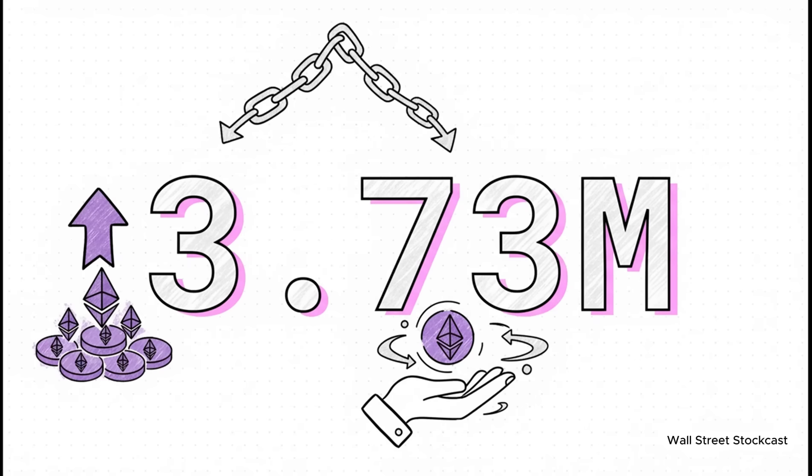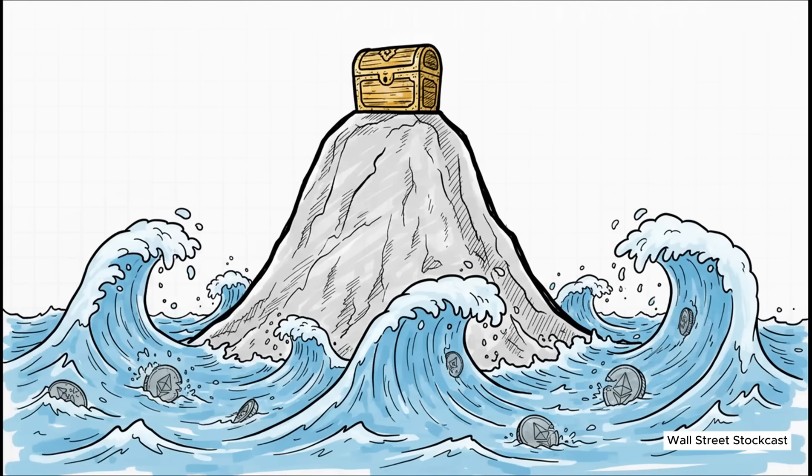And this right here. This is the number. This is the one you need to remember from this whole thing. 3.73 million ETH. That's what Bitmine Immersion Technologies, or BMNR, holds. It's their core asset, and it's a fixed amount. Now, just think about that for a second. What happens when you own a fixed chunk of a company that is constantly buying back its own stock and just setting it on fire?